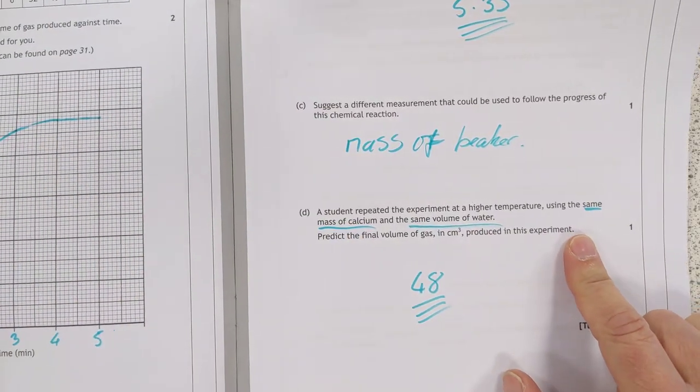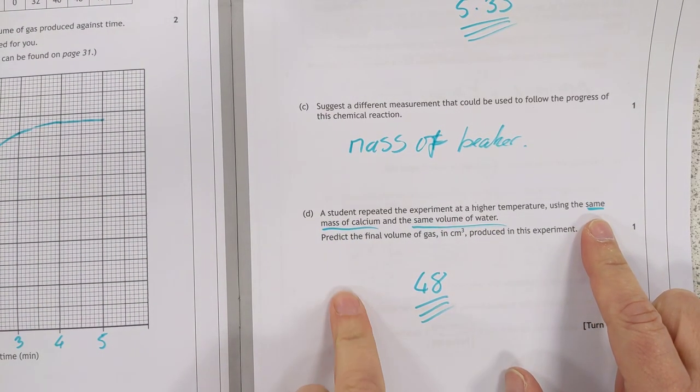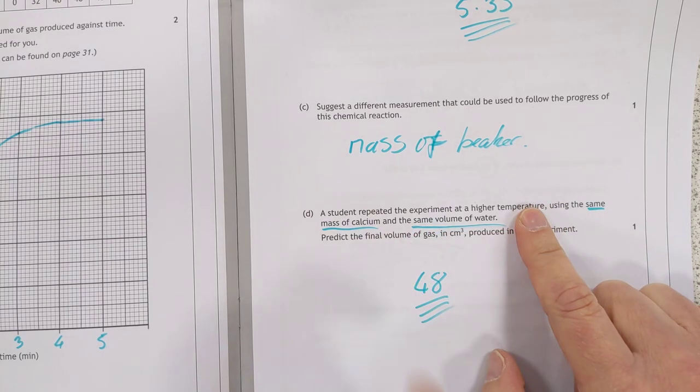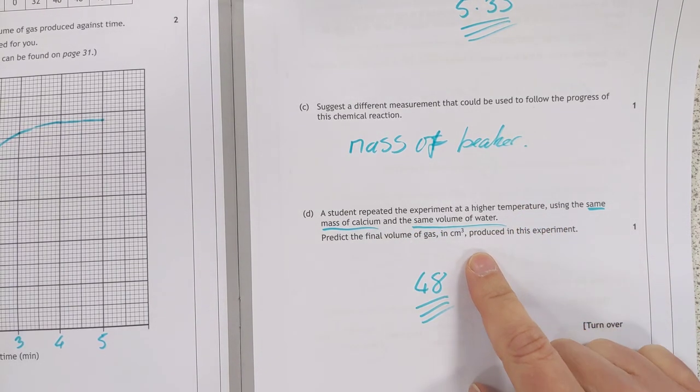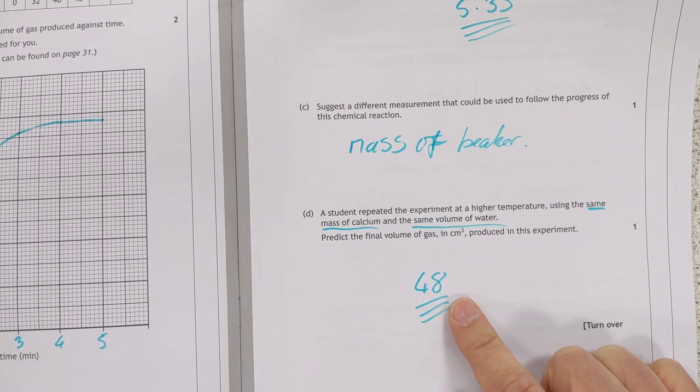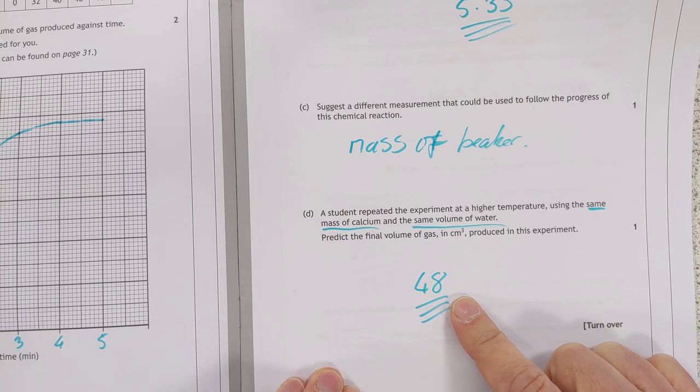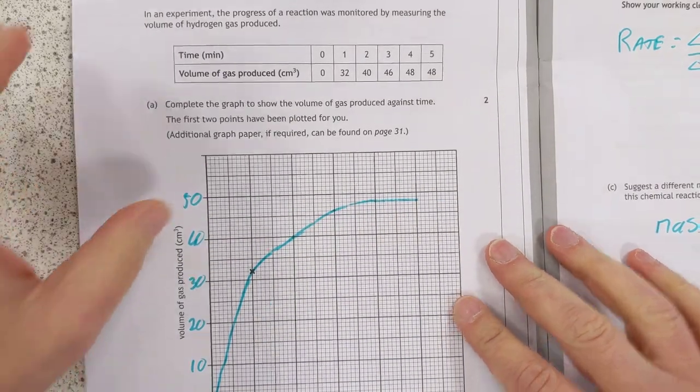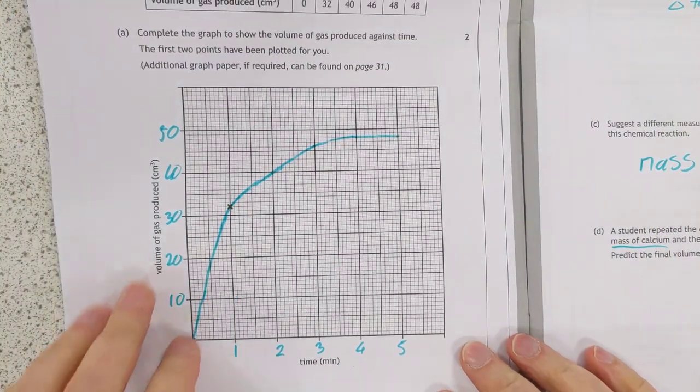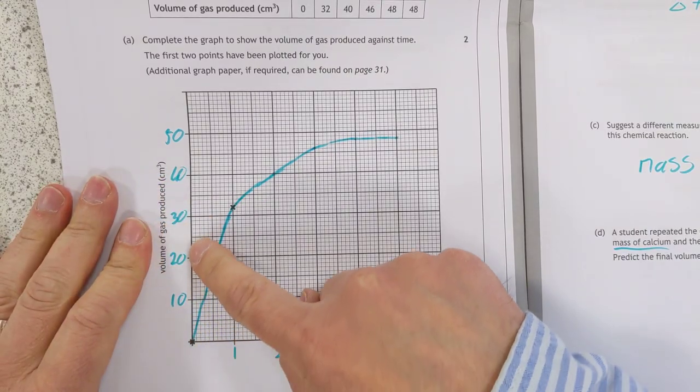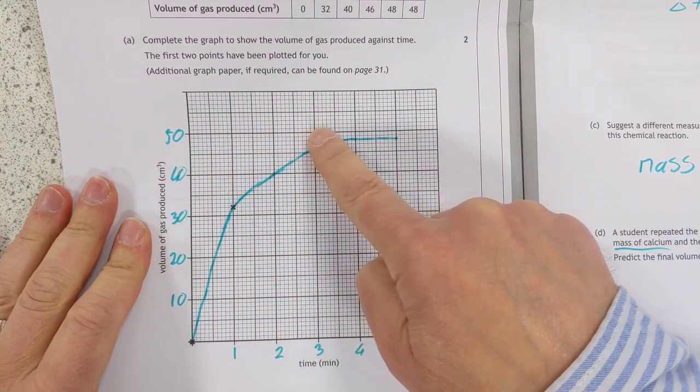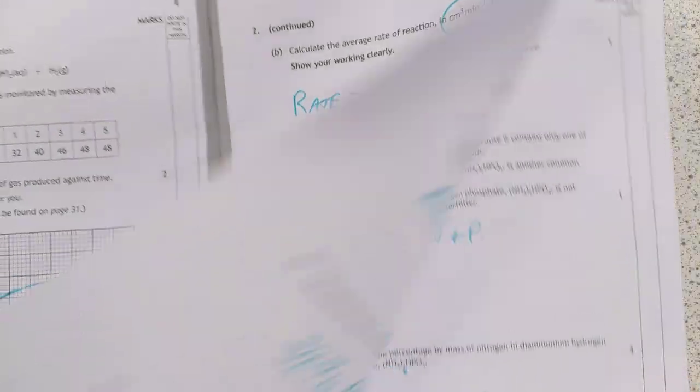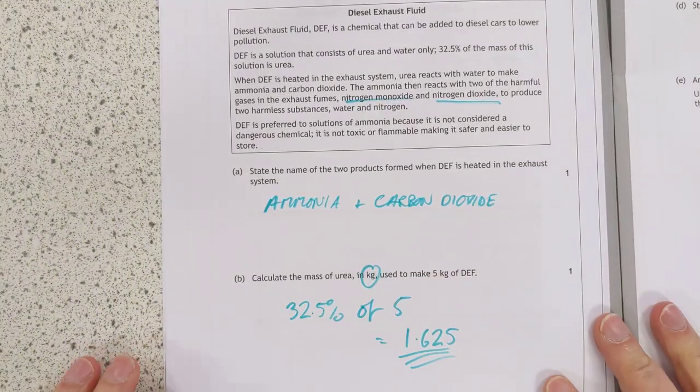Suggest a different measurement that could be used to follow the progress of this reaction. Well, this reaction is giving off gas, which means you could measure the weight of the beaker. As time goes on, the mass of the beaker will drop, rather than collecting the volume of gas. That's a tough one, actually. See how many people got that one right. A student repeated the experiment at a higher temperature using the same mass of calcium and the same volume of water. The only thing that has changed is the temperature. That will have no effect then. This is almost a trick question. On the final volume of gas, it will still be 48 centimeters cubed. You'll just get that 48 centimeters cubed faster.